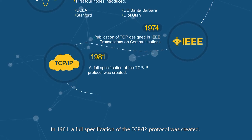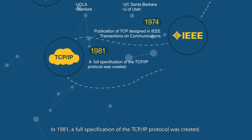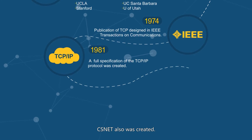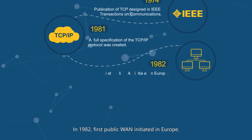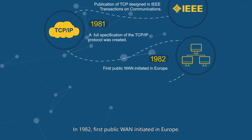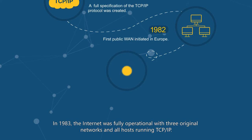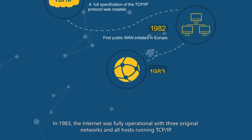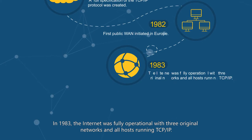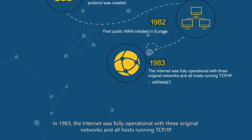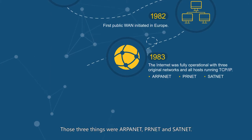In 1981, a full specification of the TCP/IP protocol was created. SNEF was also created in 1982, with the first public one initiated in Europe. In 1983, the internet was fully operational with three original networks and all hosts running TCP/IP.